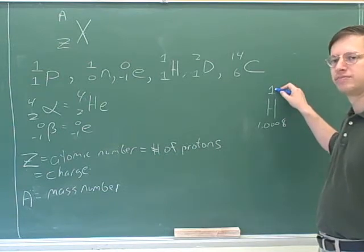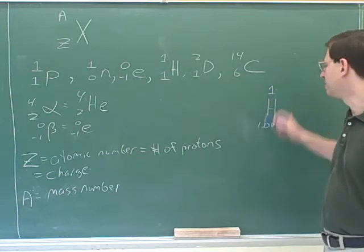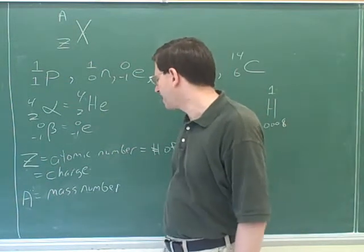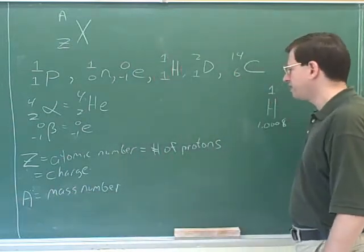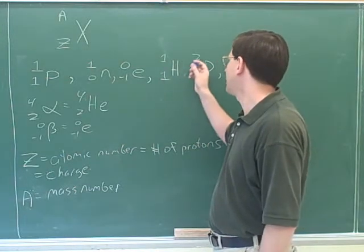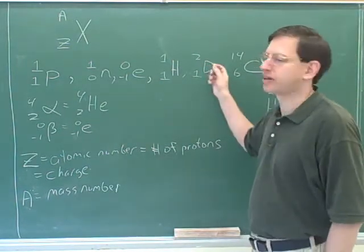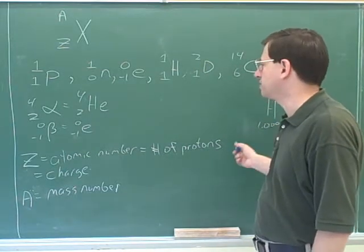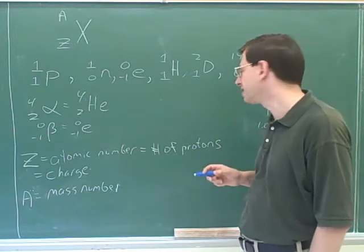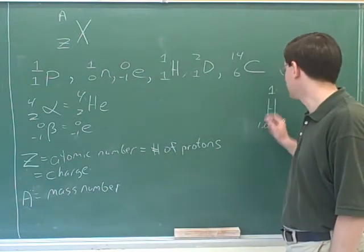In the periodic table, the top number represents the atomic number Z. However, the number shown in the periodic table is actually the atomic mass, which is a different concept from the mass number. The atomic mass is an average over all naturally occurring isotopes of an element, whereas the mass number refers to the actual mass of a specific isotope's nucleus. For this chapter, we'll use the atomic numbers from the table but not the atomic mass values.